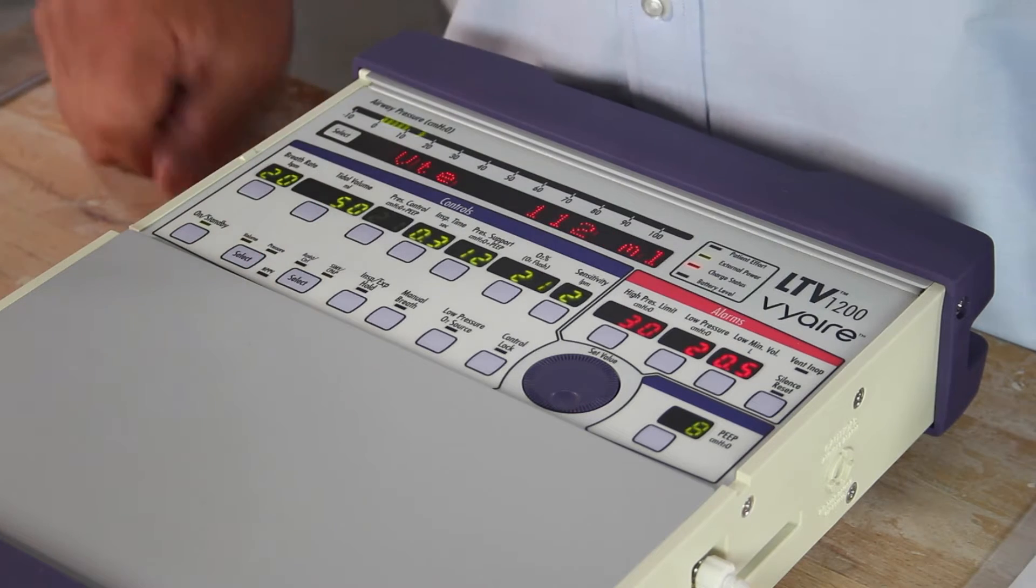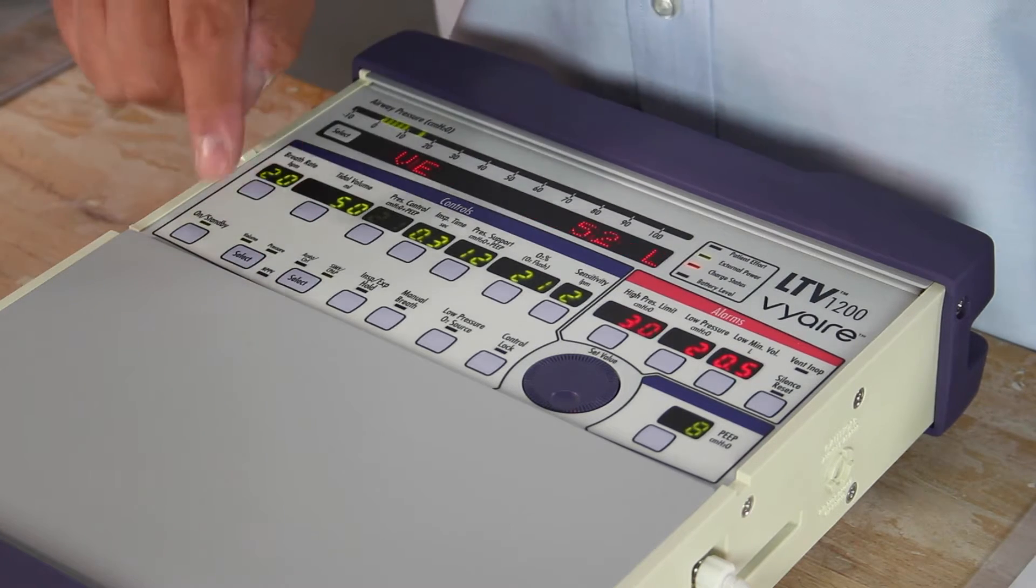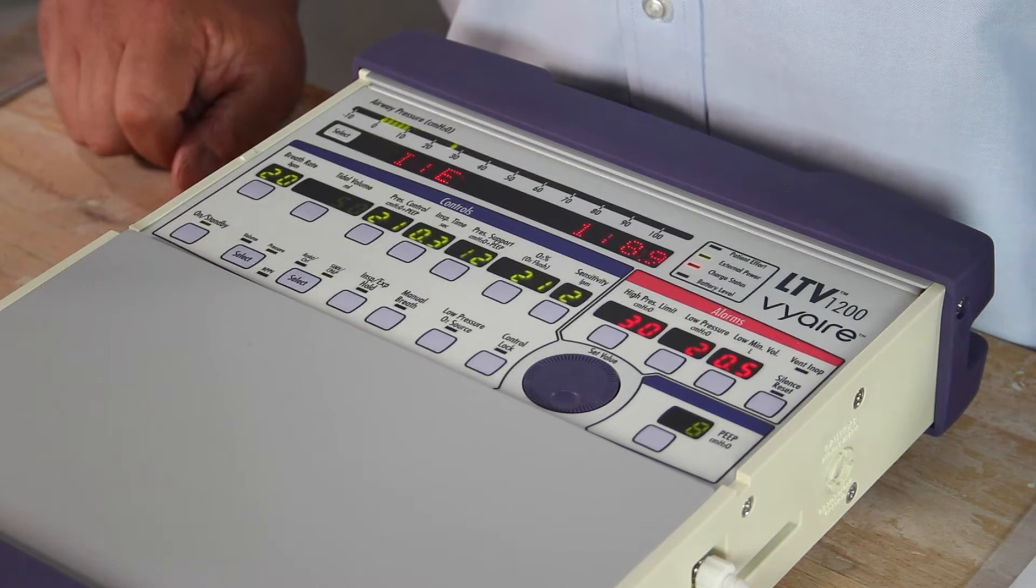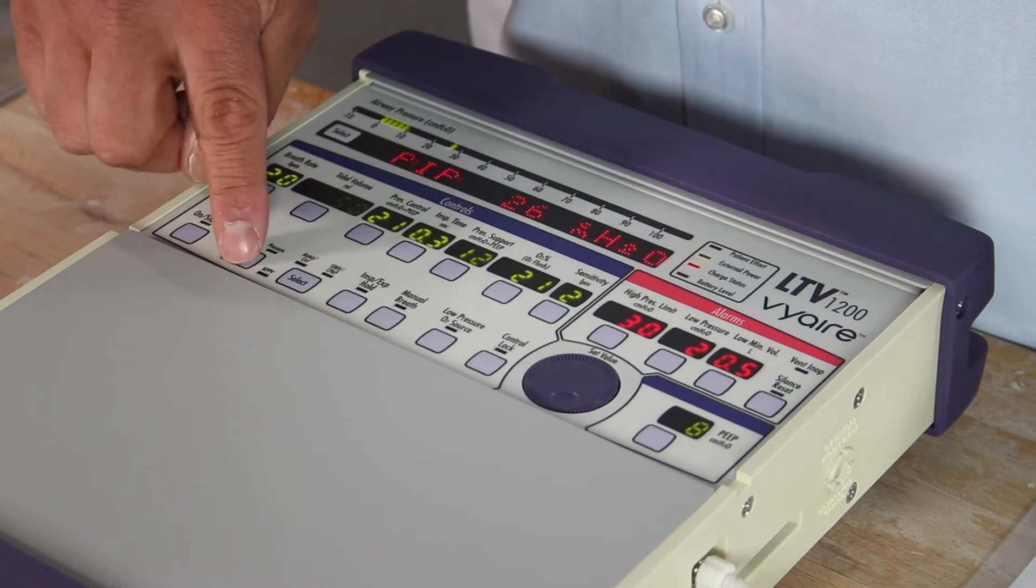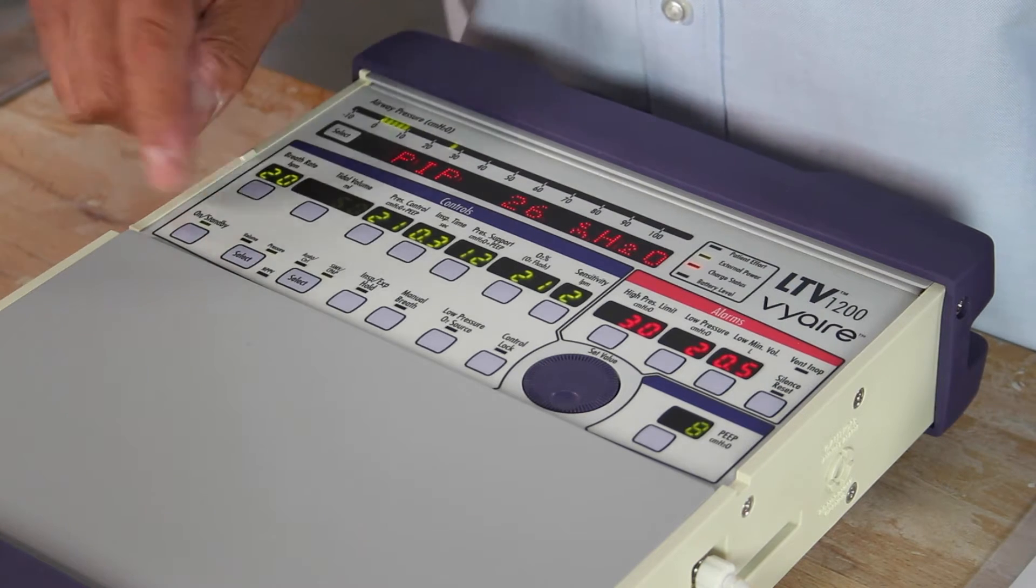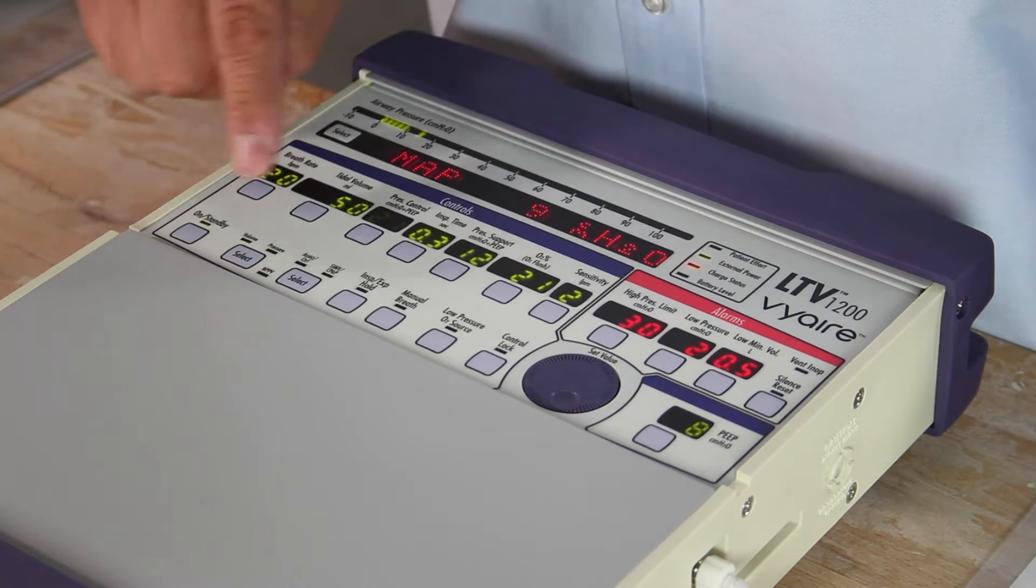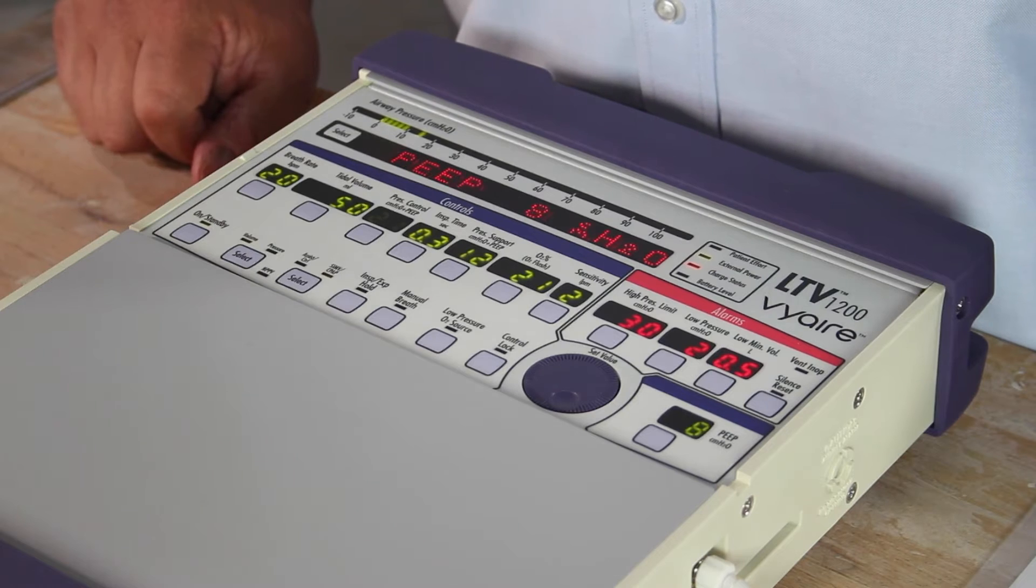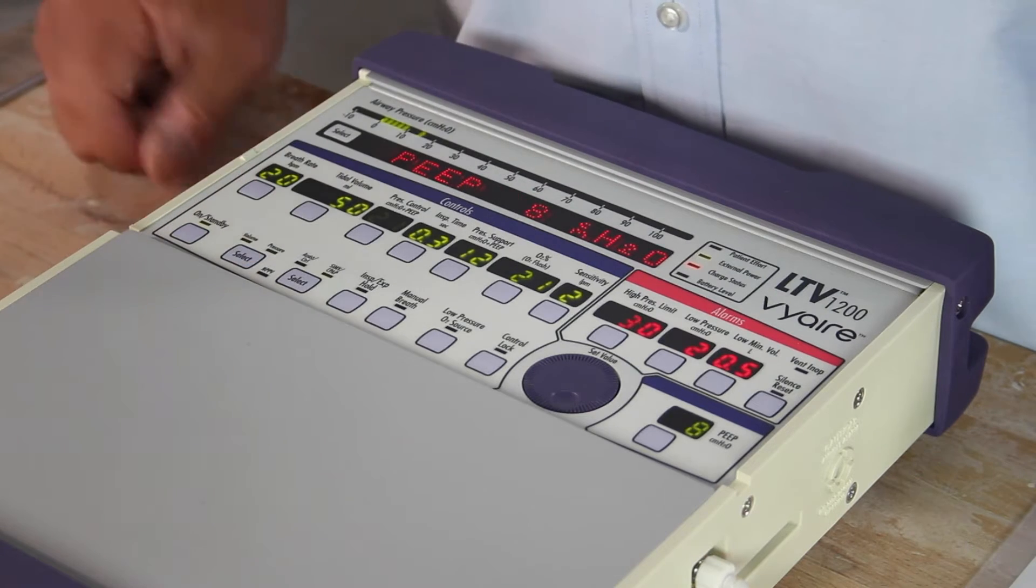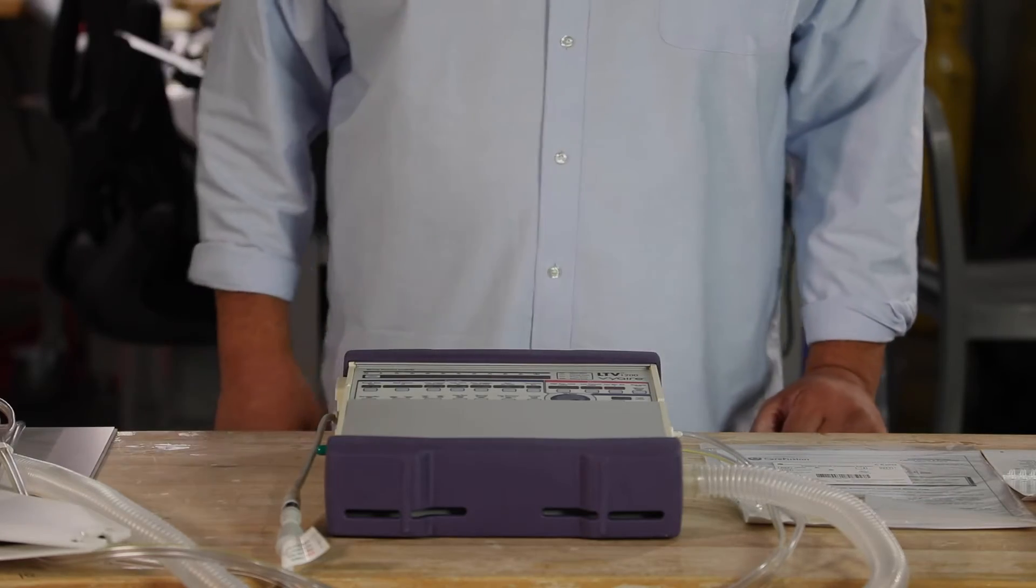Press again, pressure is blinking. I press one more time and we are back in pressure control. Press once, press again to confirm, I am now in volume ventilation. Switch back to pressure, press once, confirm, I am now back in pressure control.